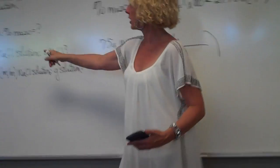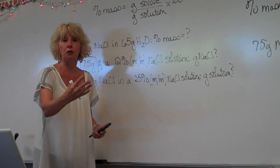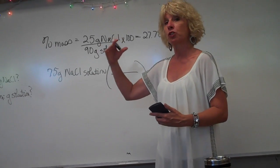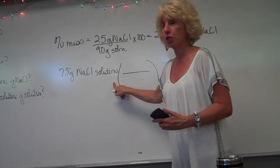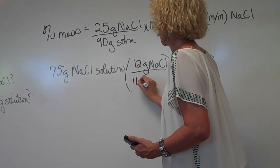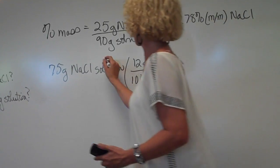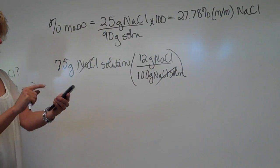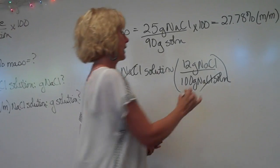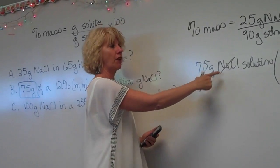We also know that it is a 12% solution. What does percent mean? Percent means out of 100, which means I have 12 grams of salt in 100 grams of solution. I want to cancel out solution, so I write down 12 grams of salt per 100 grams of salt solution. Grams of solution cancels out, and now I can multiply and divide: 75 times 12 divided by 100 gives me 9 grams of salt in 75 grams of a 12% solution.